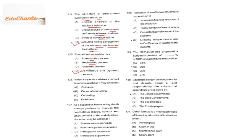Question 124: the objective of educational supervision should be ensuring holistic development of students, teachers, and institutions — not only teacher behavior, student exam performance, or time coverage. Question 125: educational supervision is continuous and dynamic — not bureaucratic, mechanistic, or ritualistic. Question 126: when a supervisor advises a burnout teacher, it may be called personal counseling or feedback — the supervisor understands the teacher's problem and provides measures or gives feedback on how to adjust.